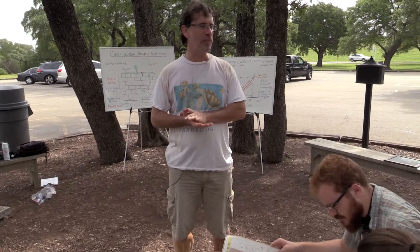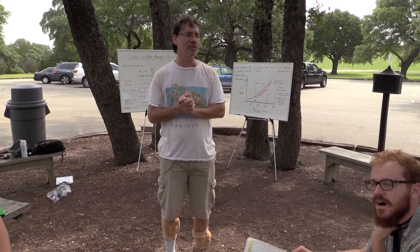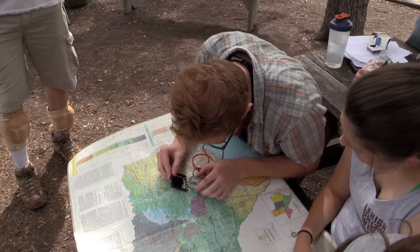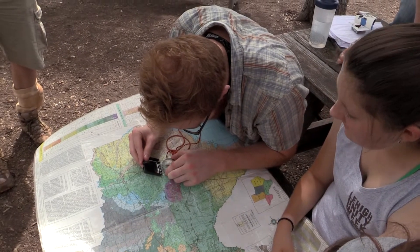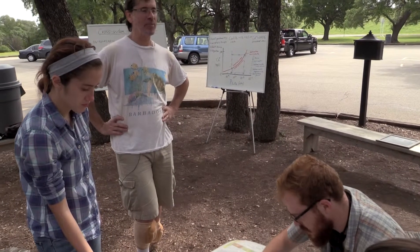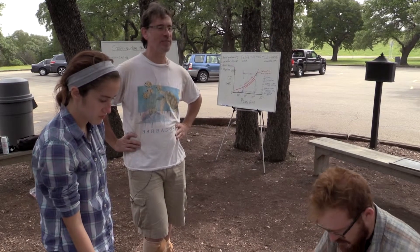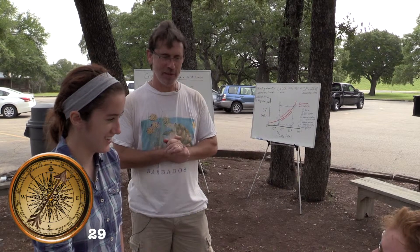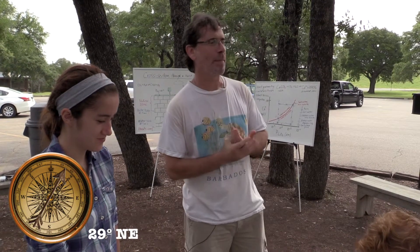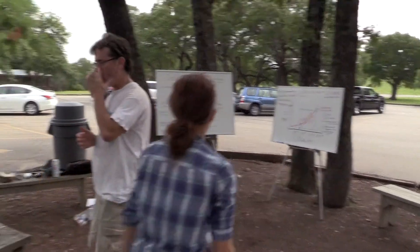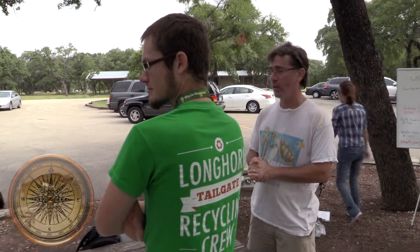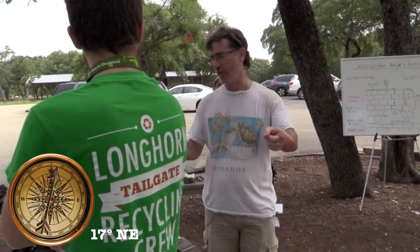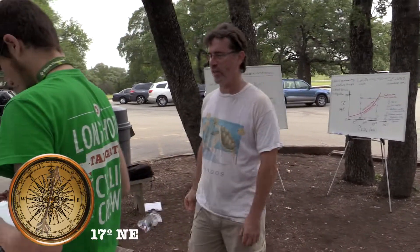To put a more precise number on the fault orientation, you could use a protractor or a compass. Once you have your map oriented north, take the straight edge of your compass and place it on one of the faults to get a reading. One group measured North 29 East; another group measured North 17 East — possibly because they were on a different fault. Write that information down and we will revisit it in the cave.